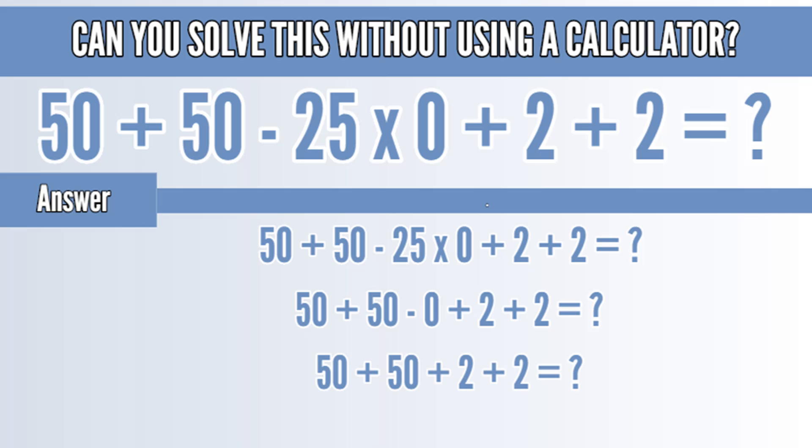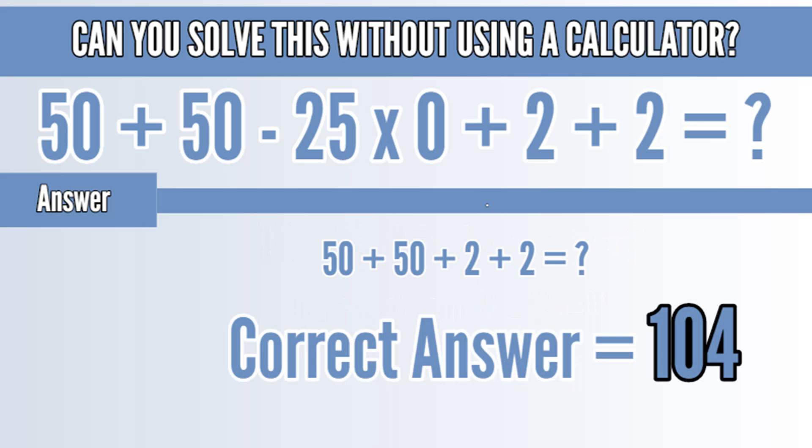We have 50 plus 50 plus 2 plus 2 is equal to question mark. If you add all the digits which gives you 104. So the correct answer of this puzzle is 104.